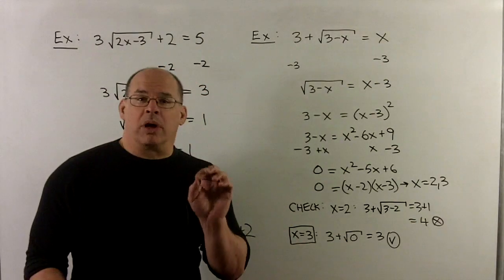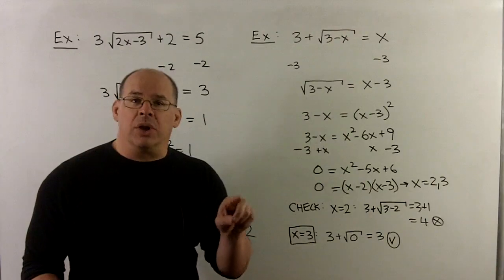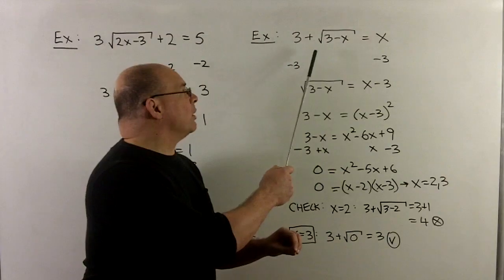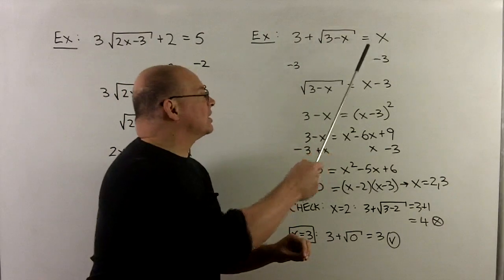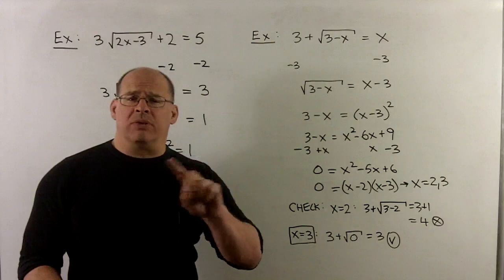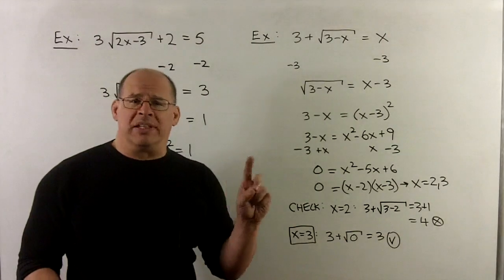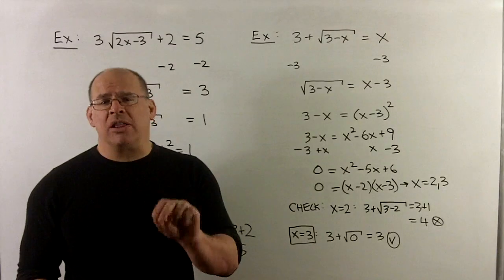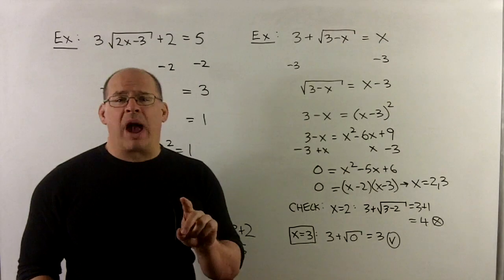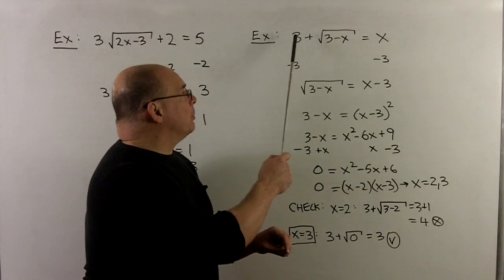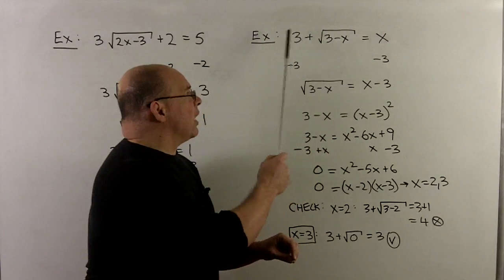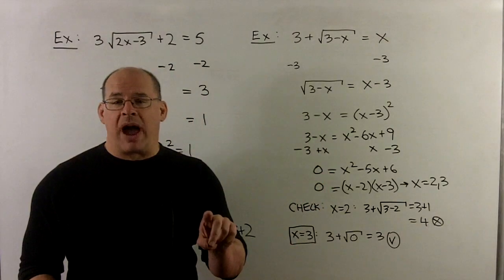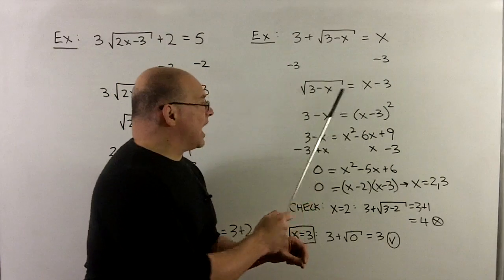For one which is a little bit more complicated, and also, the check will be very important here, let's try 3 plus square root of 3 minus x equal to x. We have x's in two different places, one in a radical, one that's not. We shouldn't be put off by that. We should just follow the checklist. So, the checklist says, isolate the radical. That means we're going to push the 3 to the other side. So, I'll add minus 3 to both sides. And now, we just go ahead with our procedure to get rid of the radical. It's isolated. I can square both sides.